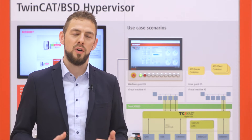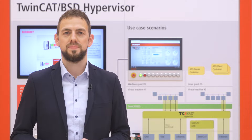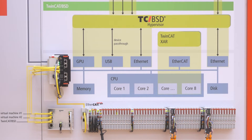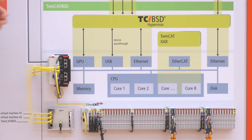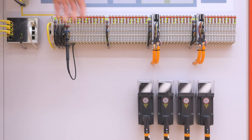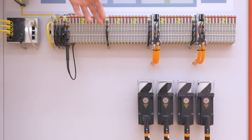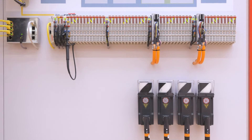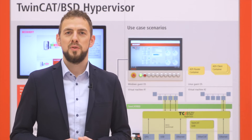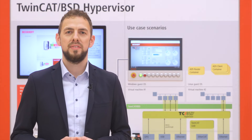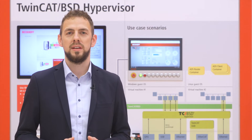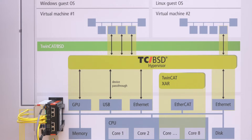Both is demonstrated on our exhibition wall. If we look at the setup, we see one back of IPC which is actually running three operating systems. First of all, Trincat BSD is a real-time operating system which is used to control the access and the running lights. A second operating system, the Trincat BSD hypervisor, is running Windows 10 inside the virtual machine.